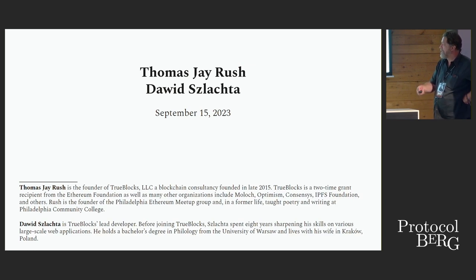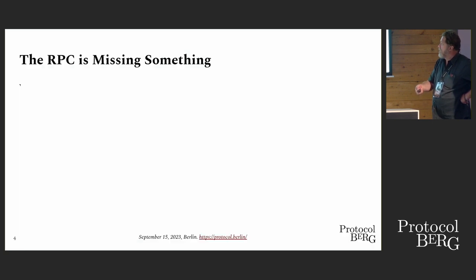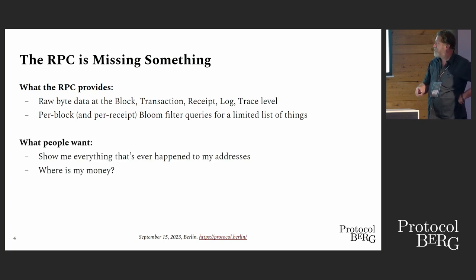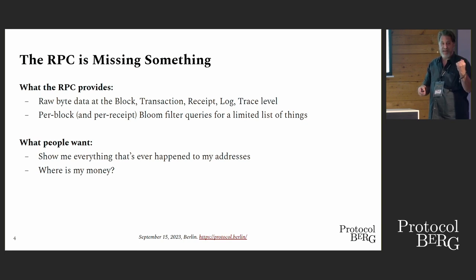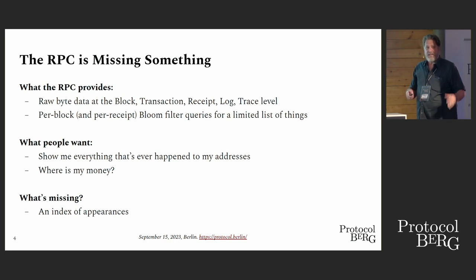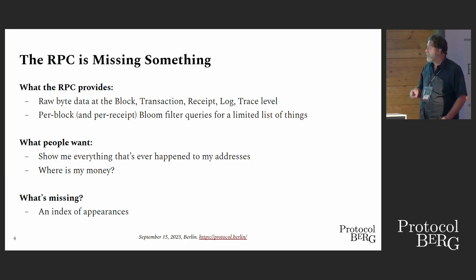My name is Thomas Rush. I think the problem is that the RPC software is missing something. What the RPC currently gives us is raw byte data per transaction per block. What people actually want is: given an account address, return everything that ever happened to it — where their money is, how state changed in a smart contract, including token balances. What's missing is an index of where addresses appear on the chain, and with that index we could answer all of these questions.